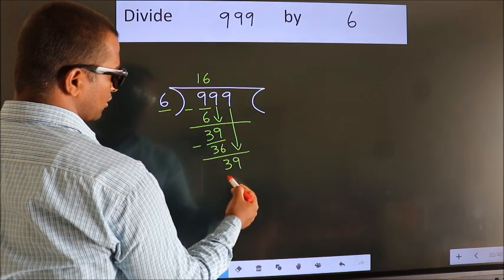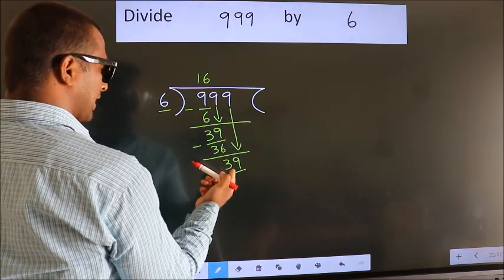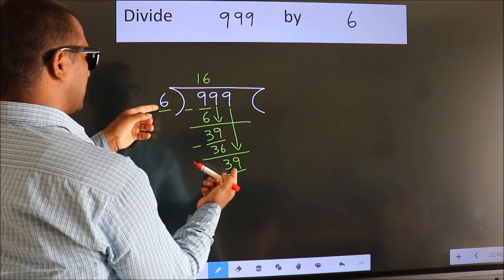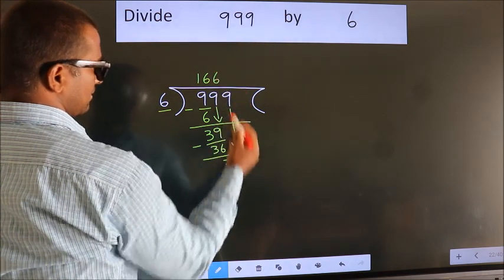So, 9 down. So, 39. A number close to 39 in 6 table is 6 times 6 equals 36.